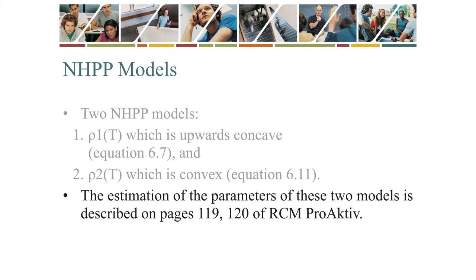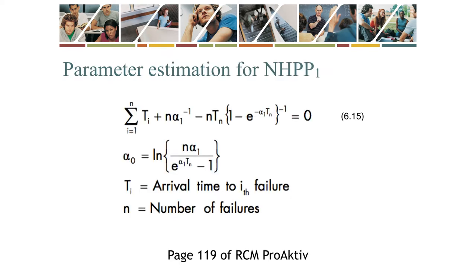Pages 119 and 120 of the RCM Proactive book describe the estimation of parameters for the two NHPP models. In the case of NHPP1, parameter alpha1 is estimated iteratively from the first equation. The value of alpha1 is then substituted into the second equation, which yields the value of alpha0. A simple iterative search or repeated halving can be used to find alpha1. Alternatively, the Goal Seek function of Excel can be employed — this will be our approach.